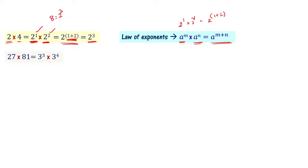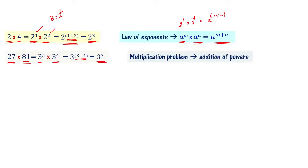For example, 27 times 81: 27 can be written as 3 power 3, and 81 is 3 power 4. So this can be written as 3 power 3 plus 4, which equals 3 power 7. It is a multiplication problem, but with exponents it becomes an addition of exponents problem.